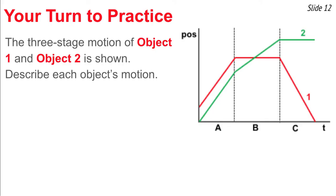Now it's your turn to practice. Here you see a position-time graph with two objects: object one represented by the red line and object two by the green line, both with three-stage motion. Your task is to describe each object's motion during the three distinct stages. Pause the video, think it over, then press play to see how you did.